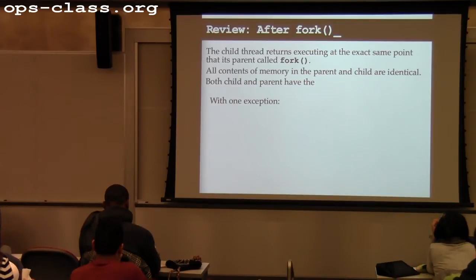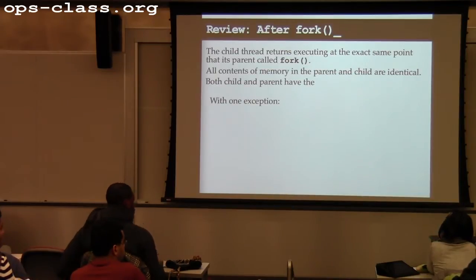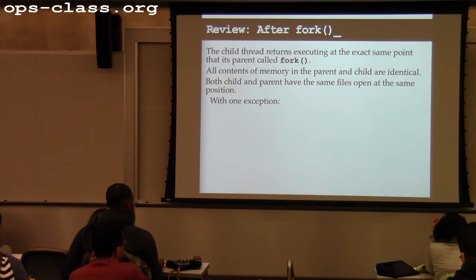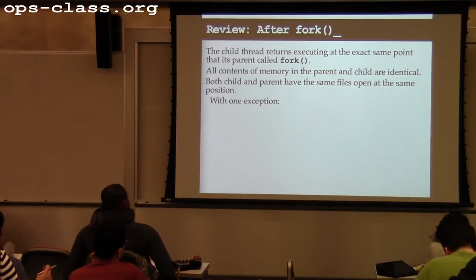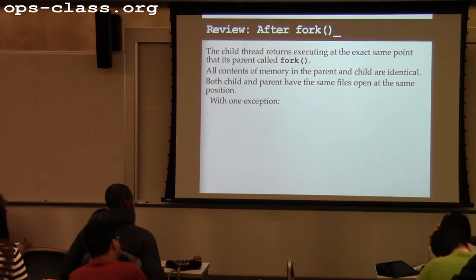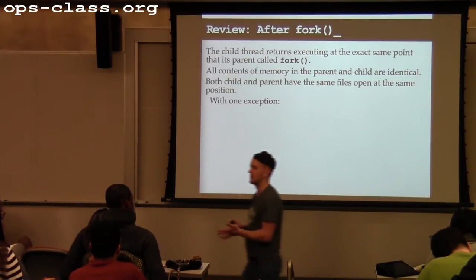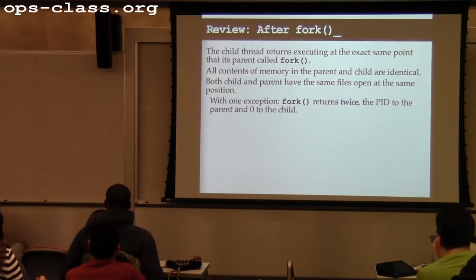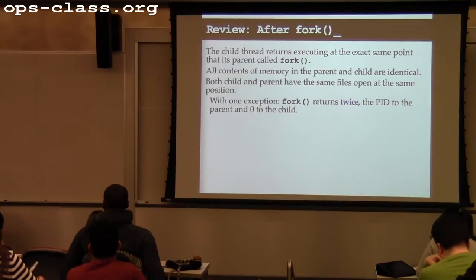Both child and parent have the same file handles open at the same position when the child starts executing. There are many variations of fork, but the one that makes the most identical copy always has one exception: when fork returns, it must return twice — returning the PID to the parent and zero to the child — so that we can tell who is who.